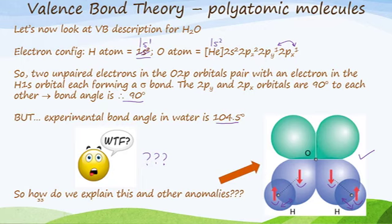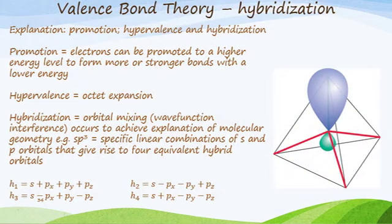What happens is we get this thing called hybridization. Hybridization is orbital mixing, meaning electrons from an s orbital can be promoted into empty spaces of p orbitals so that we have unpaired electrons and form these mixed orbitals which are hybridized. We get promotion, hypervalence, and hybridization. Electrons can be promoted to a higher energy level to form more or stronger bonds with lower energy. We have orbital mixing or wave function interference to help explain molecular geometry. For example, we form sp³ for water—one s orbital overlapping with three p orbitals.